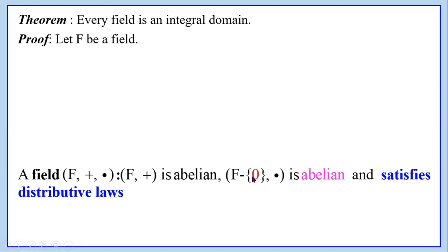Here we write minus zero because we should not consider the inverse of zero — that is, inverse exists for every non-zero element of f. That is the meaning of f minus the singleton set {0}. Zero is considered in all other cases except when finding the inverse with respect to multiplication. That is, the algebraic structure (f \ {0}, ·).